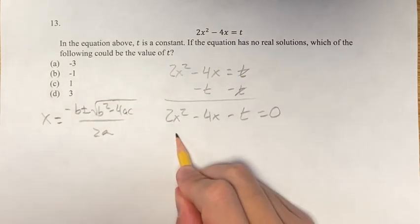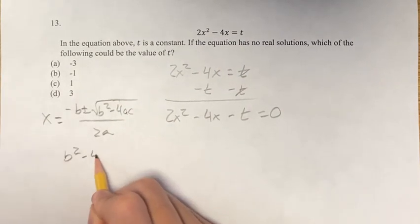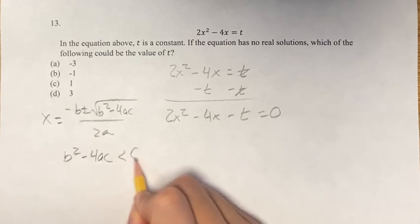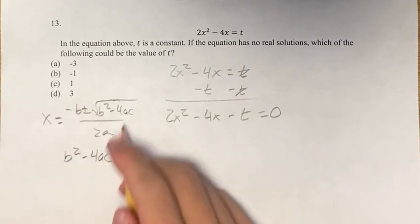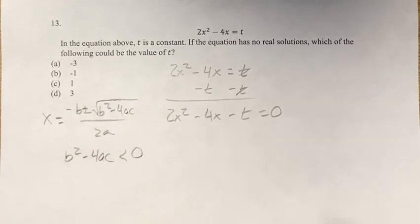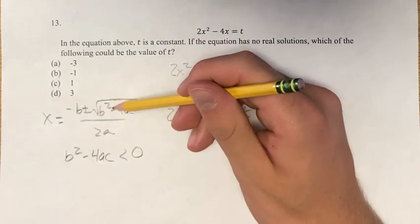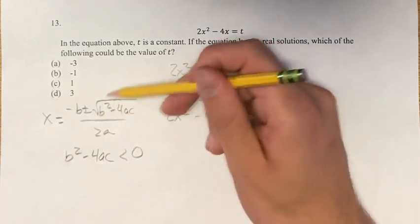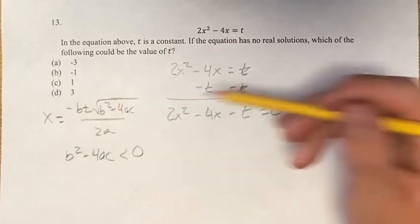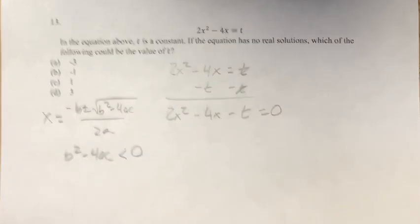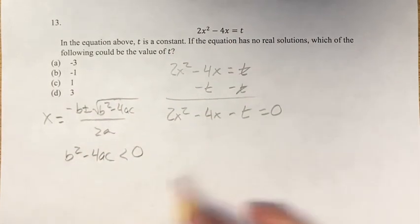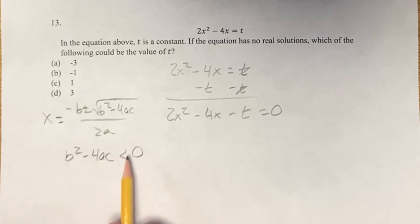So b squared, write that right here, b squared minus 4ac is less than 0. That's the only way for you to get no solutions from this. If you can actually take the square root of this, it's taking the square root of 0 or a positive number, then there's a guaranteed solution, or two solutions. But we don't have to get into that. We just have to know that b squared minus 4ac is less than 0.